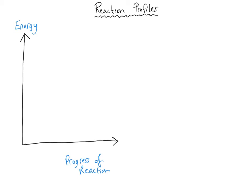If we consider a reaction where the reactants have got a certain amount of energy, I'm just going to draw a line here to represent the amount of energy that the reactants have - the chemicals at the beginning of the reaction, on the left-hand side. The products at the end of the reaction are on the right-hand side. This shows visually and very quickly that the reactants have got a higher amount of energy than the products. So the chemicals have lost energy during this reaction - this is a reaction profile for an exothermic reaction.